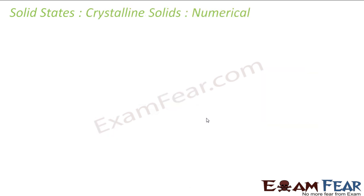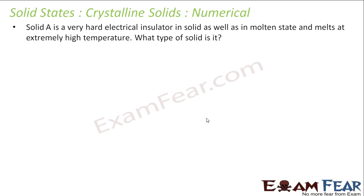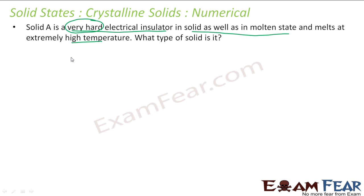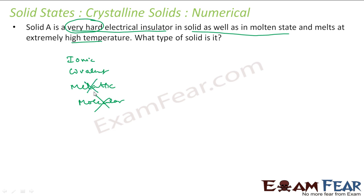Solid A is very hard, is an electrical insulator in both solid and molten state, and melts at an extremely high temperature. Since it is very hard, it will not be molecular. It is an electrical insulator, so it won't be metallic either. The choice is between ionic and covalent.